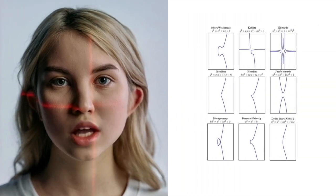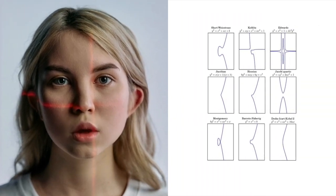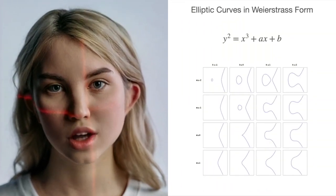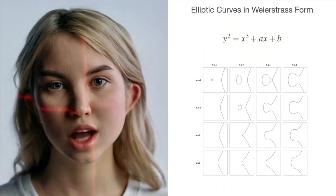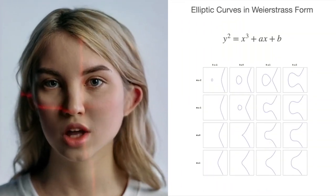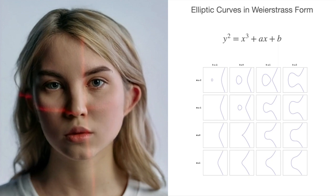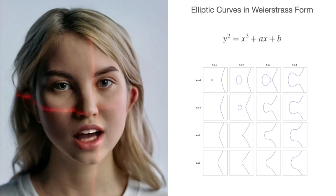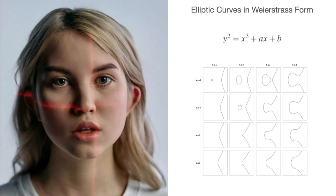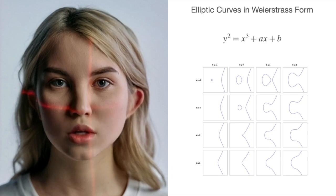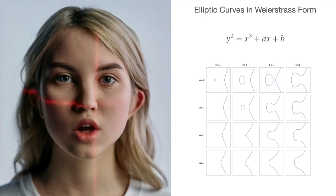To understand O, we need to look at how elliptic curves are defined. Elliptic curves can be in many different forms, but one of the most common forms is the Weierstrass form. This curve defines a curve in a two-dimensional plane, with x and y as the coordinates. However, the curve doesn't end at any specific point — it goes off to infinity in both positive and negative directions.